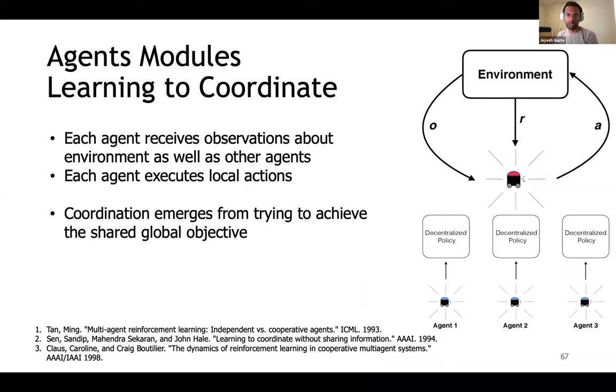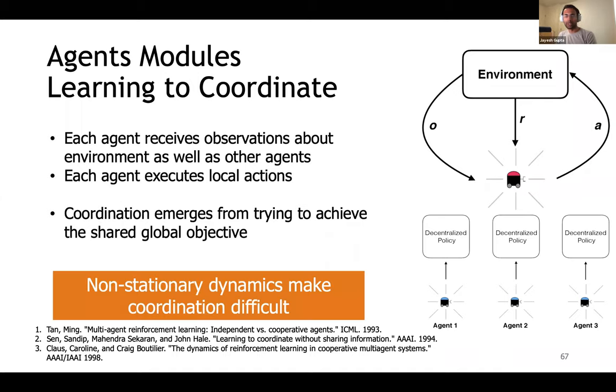Applying the principles of modularity, the idea would be to assemble the problem as independent decision-making agents and their policies. Each agent only needs to focus on their local observations and decide their local actions. Coordination can implicitly emerge in the process of learning to achieve the shared objective. Unfortunately, there is a catch. From the perspective of an agent's policy, the dynamics of the problem are now non-stationary as the other agents are learning as well and therefore changing their policies.